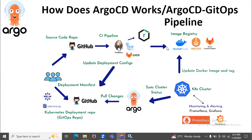In this session we are going to learn how ArgoCD works, or you can say the ArgoCD GitOps pipeline. In a previous session we learned what is ArgoCD and ArgoCD architecture. ArgoCD is implemented as a Kubernetes controller which continuously monitors running applications and compares the current live state against the desired target state.